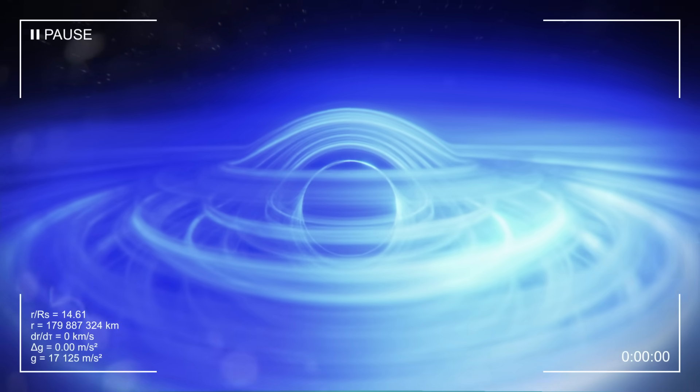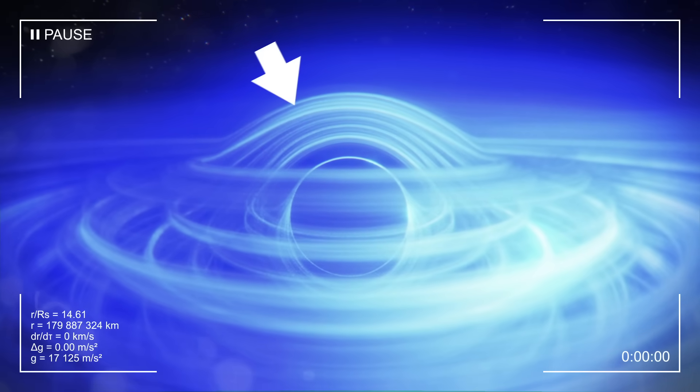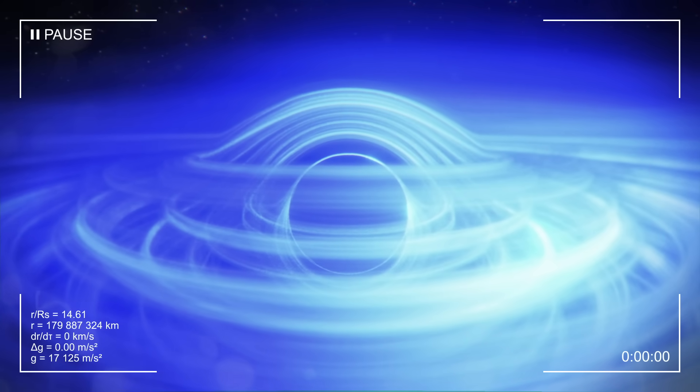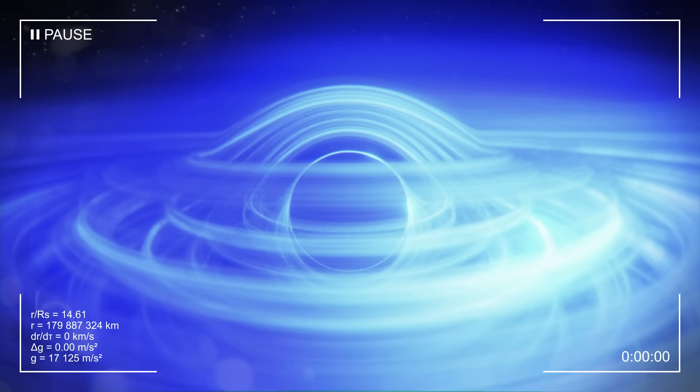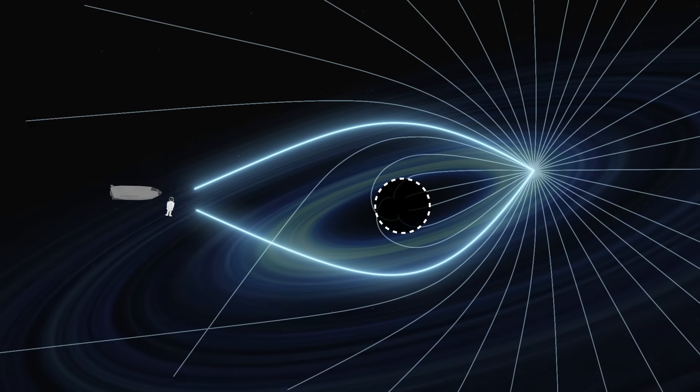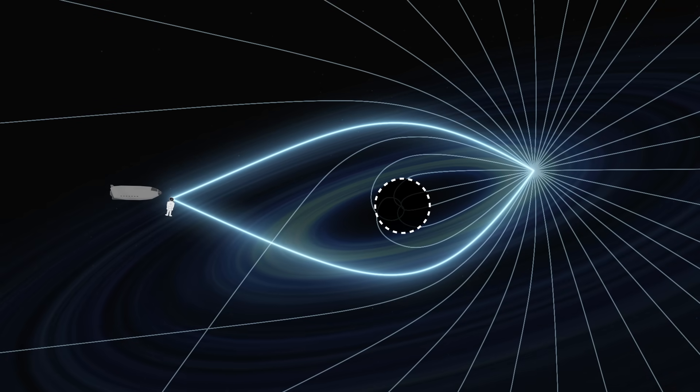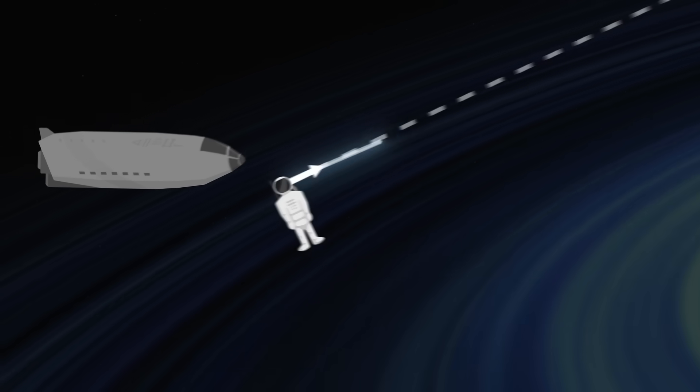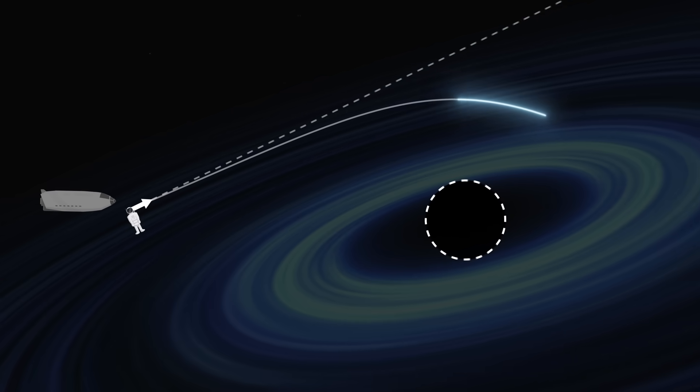Looking at the black hole, we see that the back of the disk appears warped, as if it were folded around the horizon, forming a ring of light. This is due to the strong gravity of the black hole, which deflects light rays, acting like a gravitational lens. Looking in one direction, we observe objects that are actually located elsewhere.